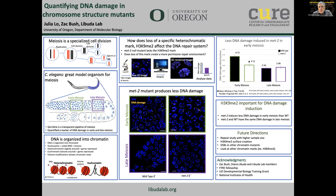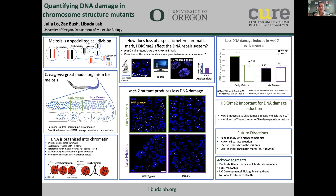During Q&A, Jacob asked how Julia quantified the DNA damage. She explained it was all done in Imaris, a 3D imaging software. DNA damage was tracked through Rad51, a protein that binds intermediate recombination structures and only marks damage destined for repair by recombination. The Rad51 data was used in Imaris to create DNA damage spots, and the software counted spots associated with each nucleus.